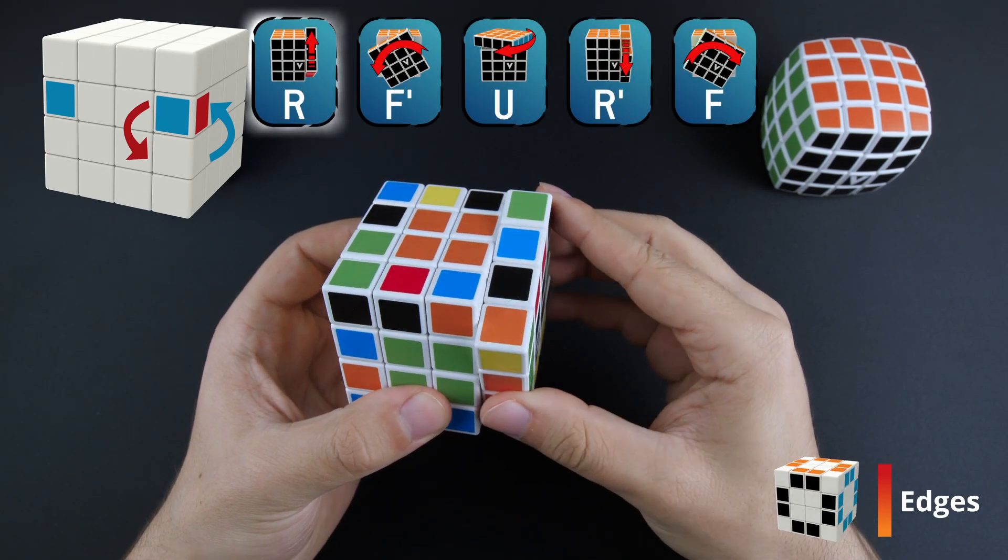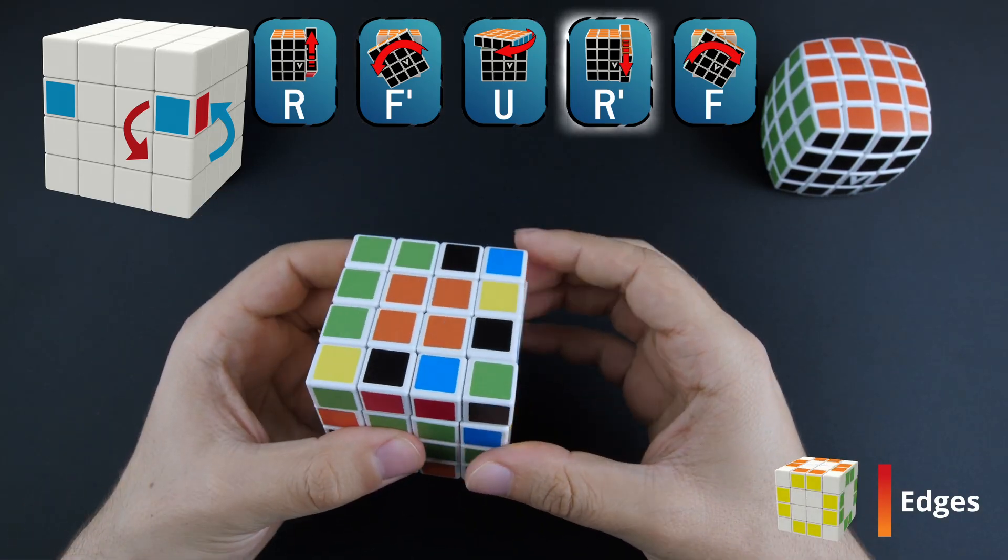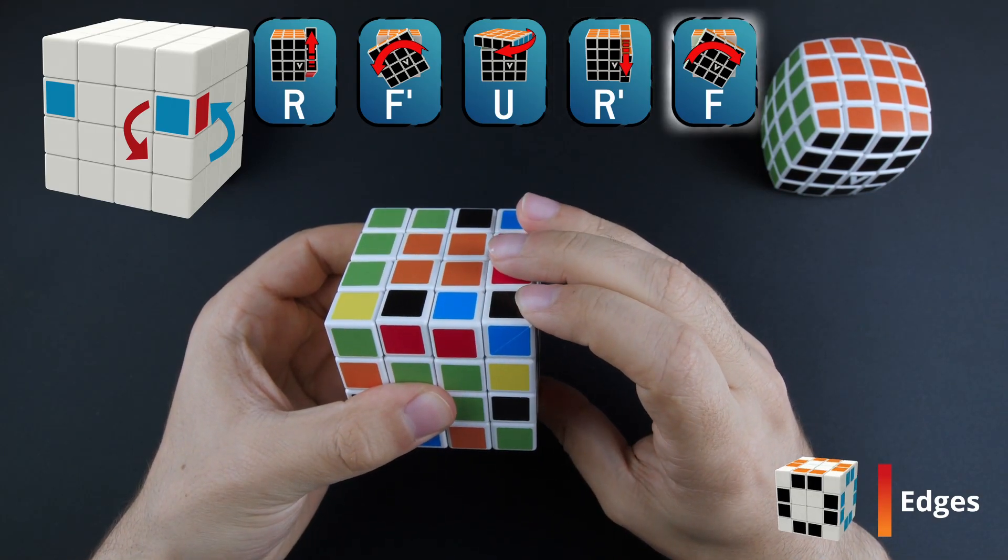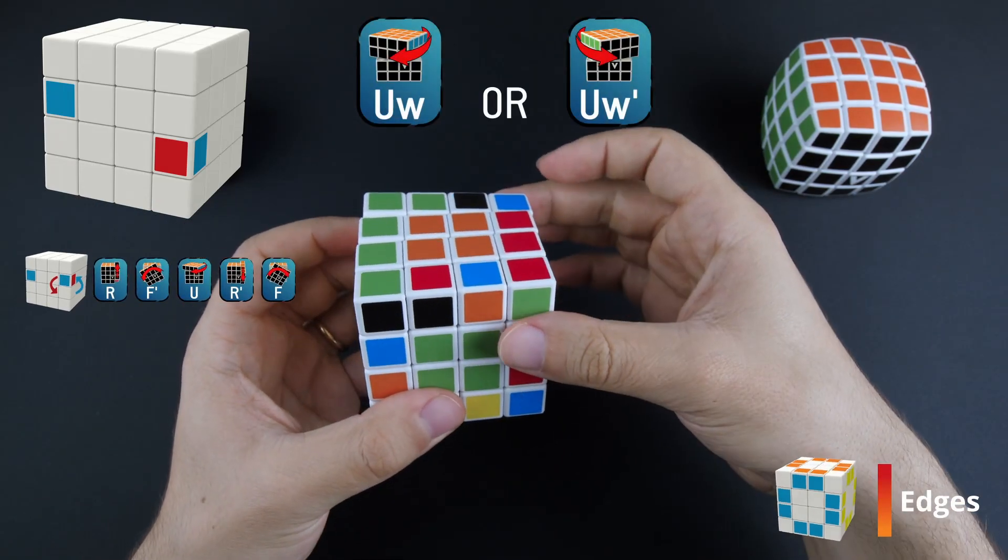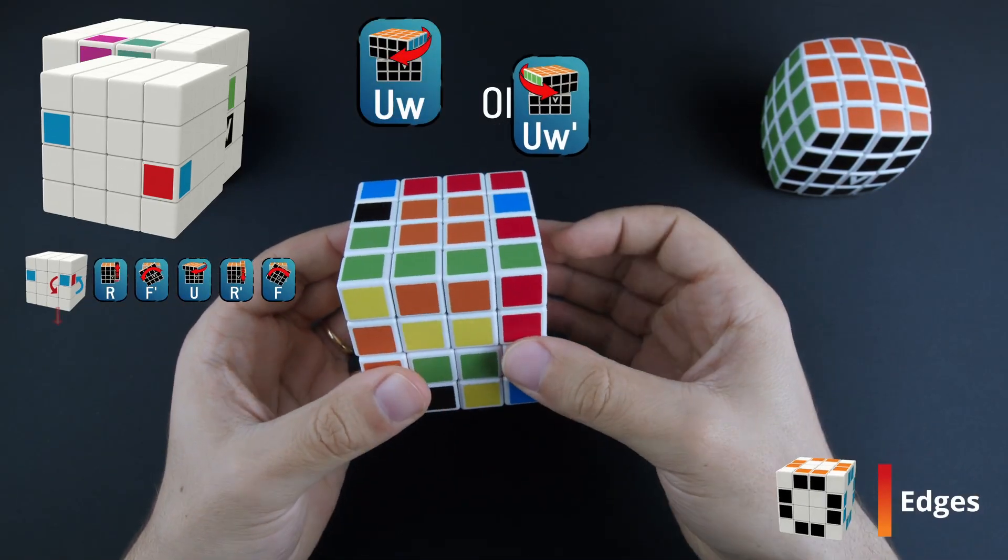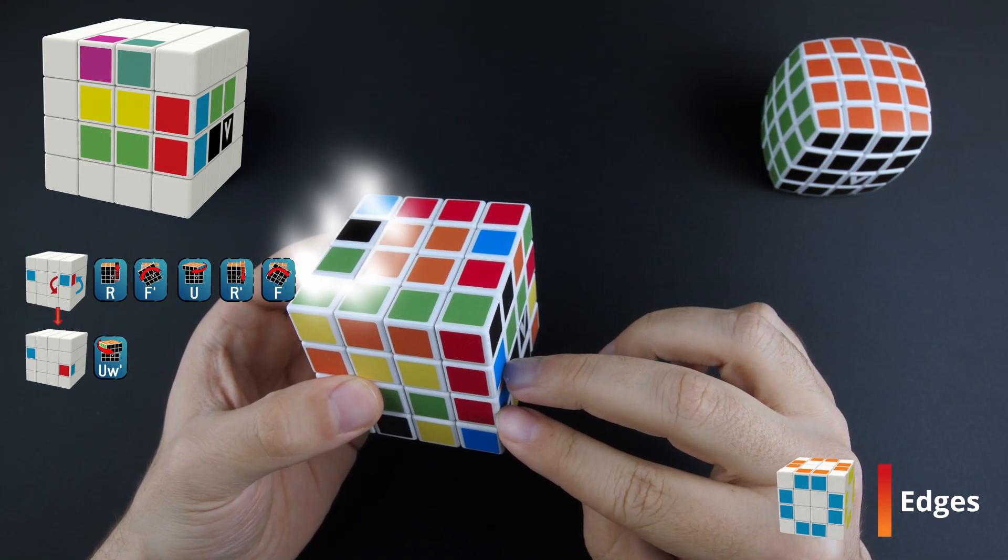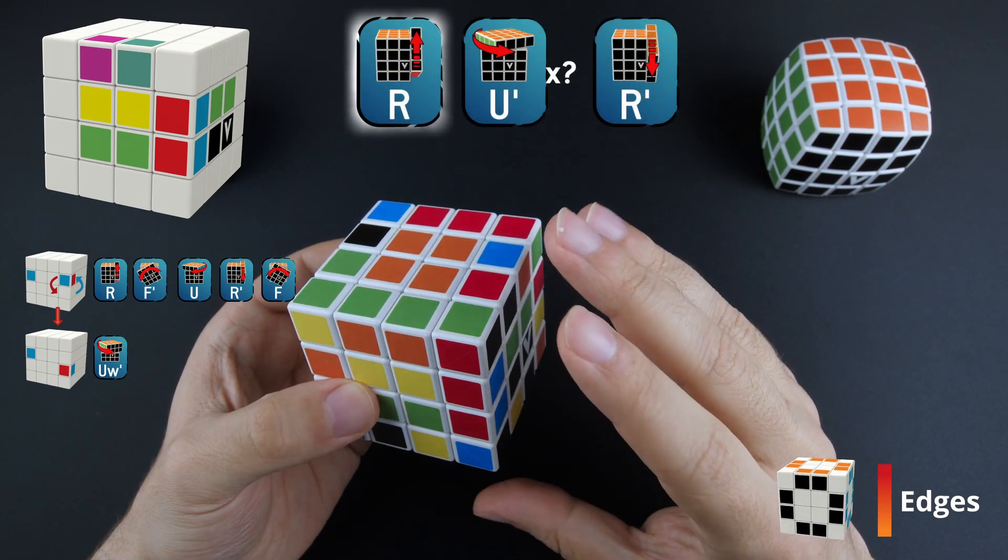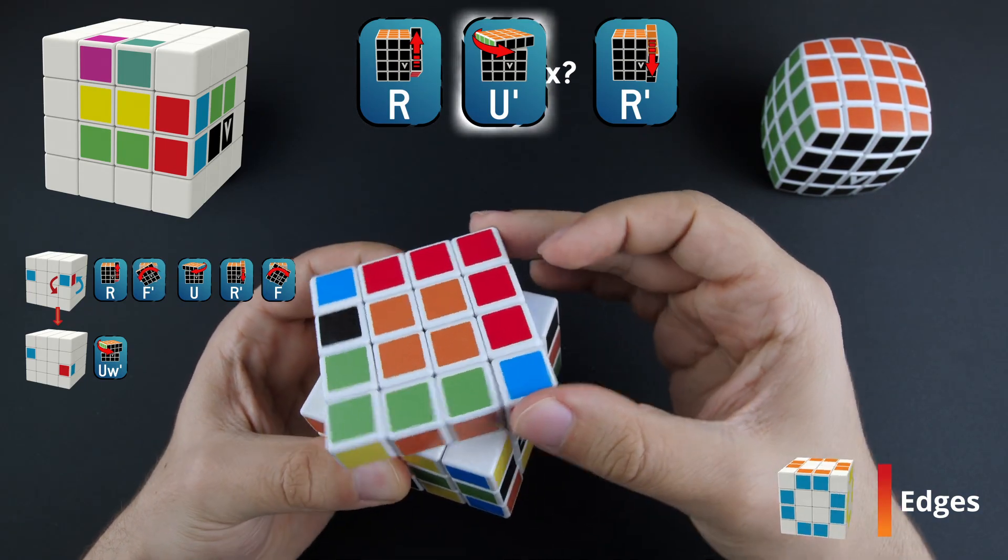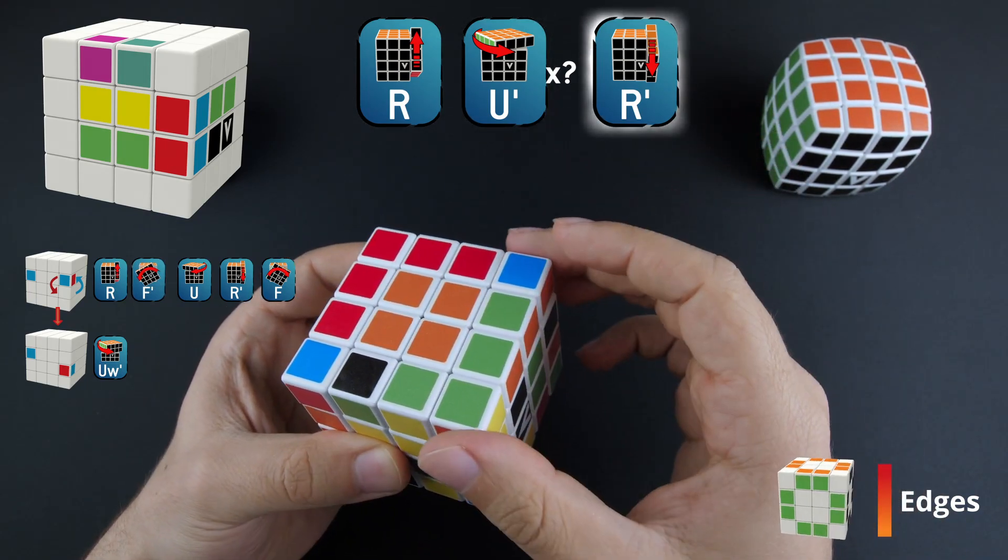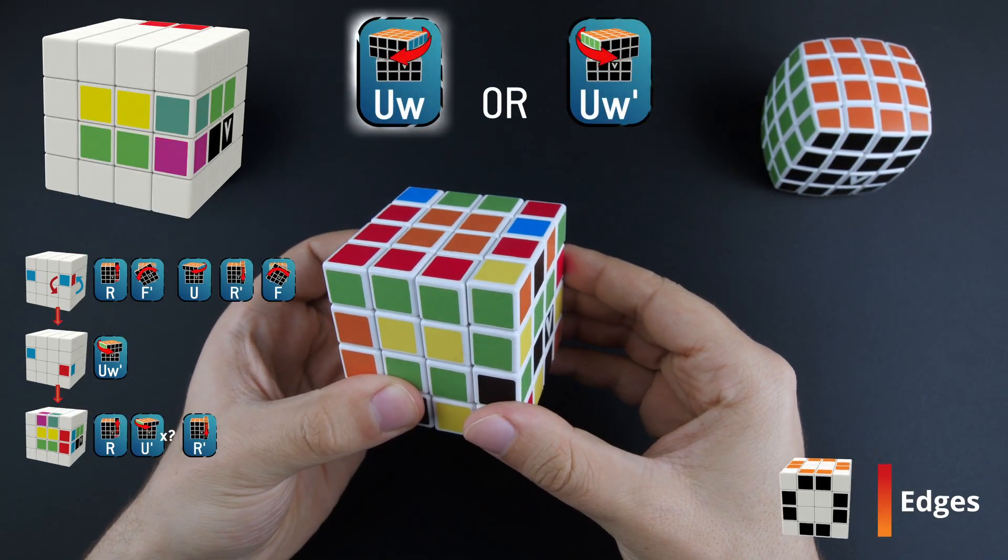R, F inverted, U, R inverted, F. Now we are ready to connect them with a UW or a UW inverted. Once we connect them, we need to replace the paired edge with a scrambled one and restore the centers. To do it, take the edge to the top layer. Replace it using U-turns and return the new spare edge in its place. Now you can undo the wide move and restore all the centers. But as you can see, our paired edge is still untouched.